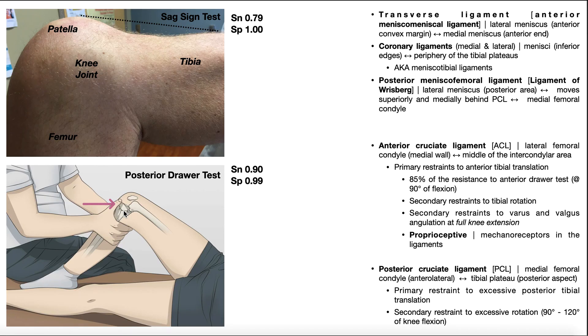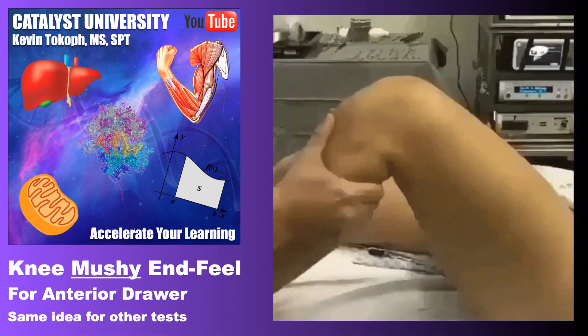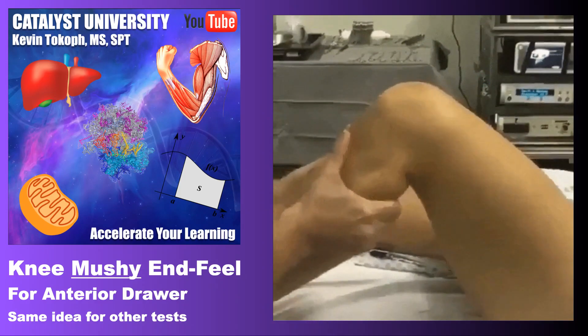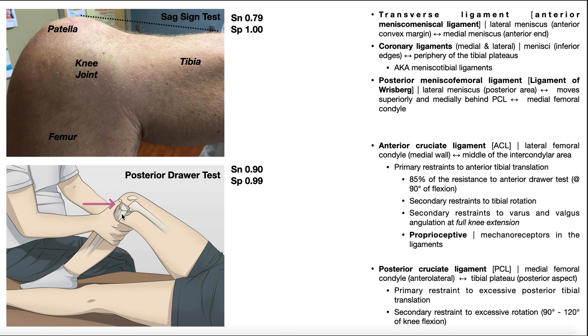The posterior drawer test pushes posteriorly — we're going to translate the tibia posteriorly. We should expect a firm end feel. If we get a mushy end feel, that would indicate a torn PCL, since the PCL is the primary restraint to posterior translation, and if it's ruptured, you should expect excessive posterior translation. A positive test is that mushy end feel. In general, for it to be positive, that translation needs to be at least six millimeters greater than on the unaffected side, so always test the unaffected side first.